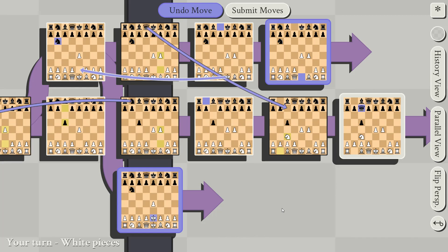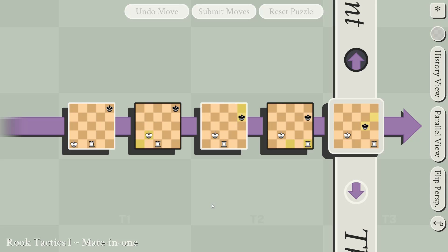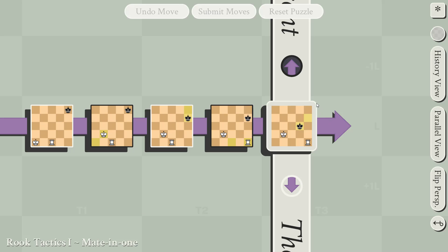Now let's solve the first few puzzles. So I'm going to click puzzles, rook tactics, one. To get a checkmate in 5D chess, you only have to capture a single king. Because this board is the only board with a thick outline, it means it's the only board I can move on.